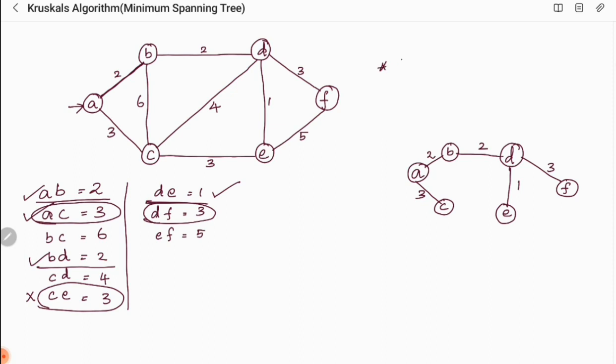Here there are no cycles in the graph and we have visited all the vertices exactly once. When you count the minimum cost it is 11. Thank you.